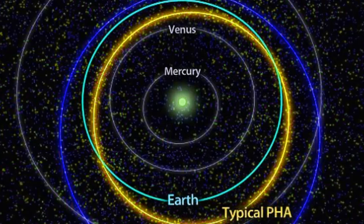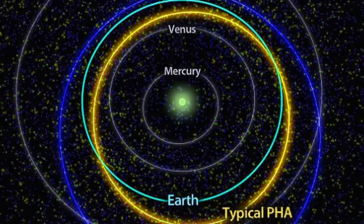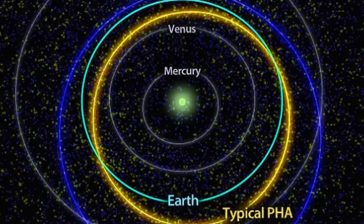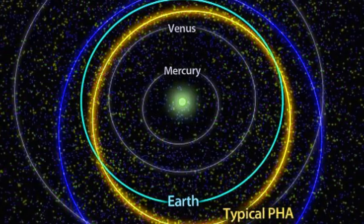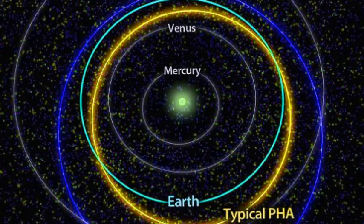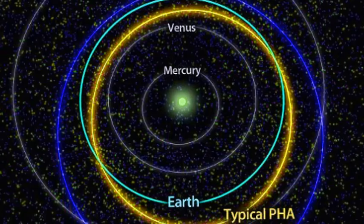NASA tracks around 12,992 near-Earth objects which have been discovered orbiting within our solar system close to our own orbit. It estimates around 1,607 are classified as potentially hazardous asteroids.